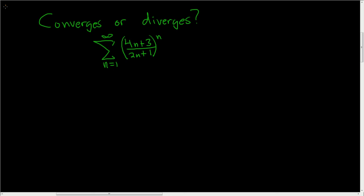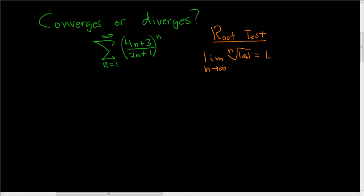We have an infinite series and we're being asked if it converges or diverges. Since it's being raised to the nth power, we'll use what's called the root test. The root test basically says: if you take the limit as n approaches infinity of the nth root of the absolute value of a sub n, and you get L,